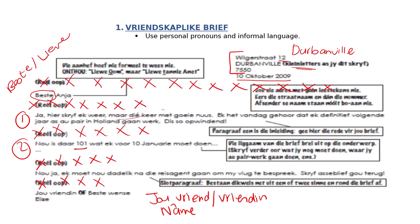And you'll probably get full marks for your format. Don't use English words. Use a few exclamation marks — as you can see, Elisa is using them because it's an informal letter. Use personal pronouns: I, you, we, us — those words — and you'll be fine. Remember, study the address, the number of your house goes after your street name, and don't forget to leave lines in between. And I'll see you in the next one.